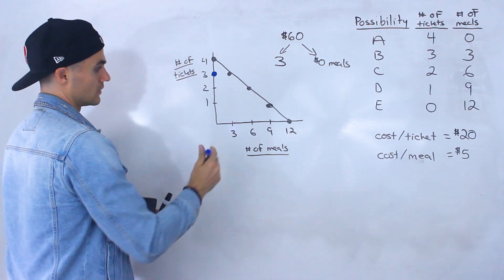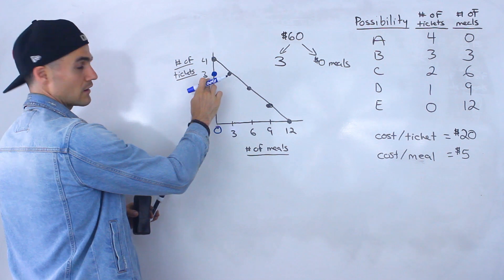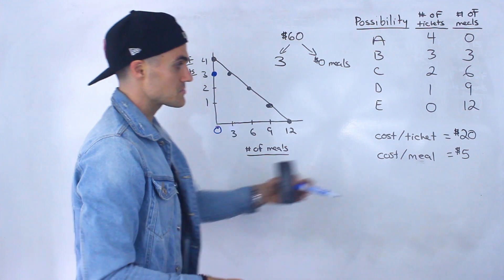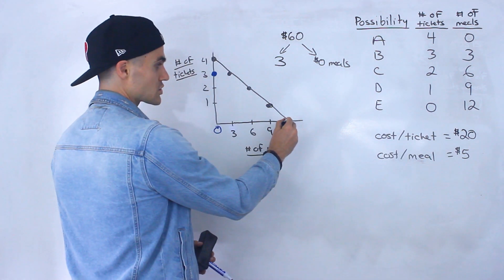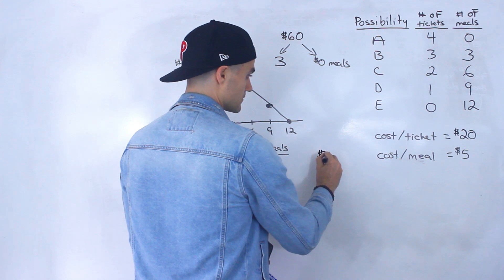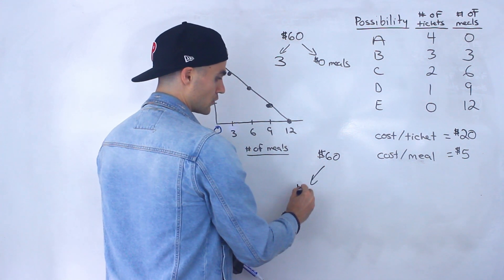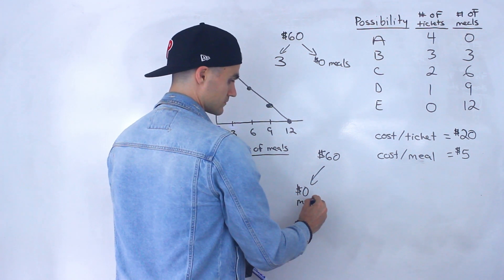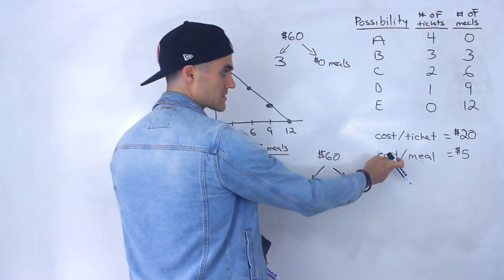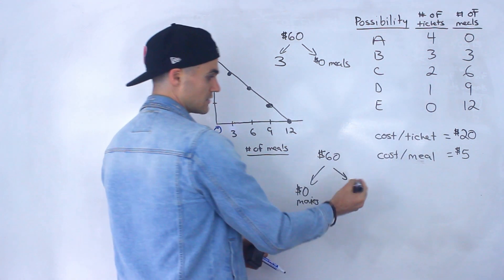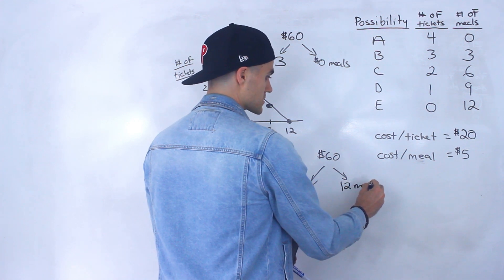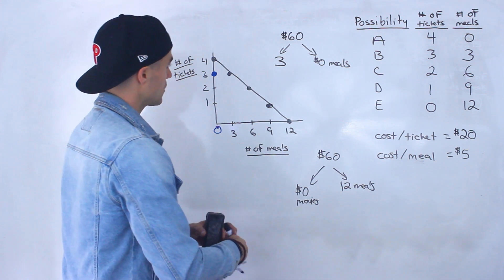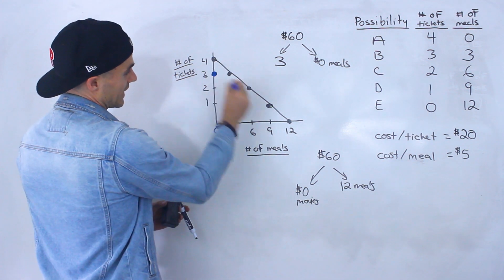It's shown in a different color — zero meals and three movie tickets. Notice that because the cost per meal doesn't change, this point actually isn't going to change. If we have $60 and spend $0 on movies, because meals are still $5 each, $60 divided by $5 gives us 12 meals. So this point here would actually stay the same. To see the new budget line, we could just connect this point and this point.